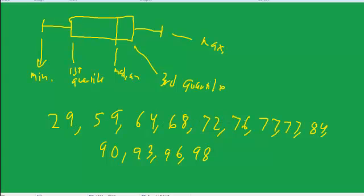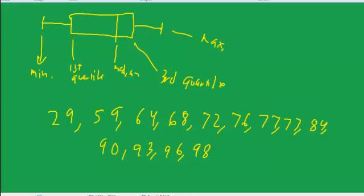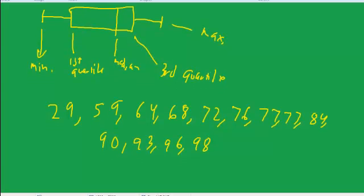I'm going to go ahead here. I have 13. Okay, so the minimum, 29, the maximum, 98. So the two ends are pretty easy to get.